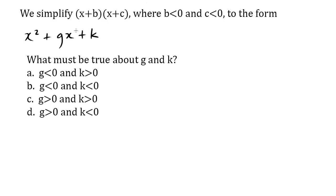What we have is x plus b, x plus c, where b and c are less than 0. So these are both negative numbers. For example, we can have x minus 2, x minus 3. These are both negative numbers.